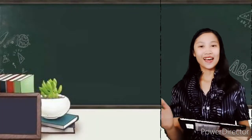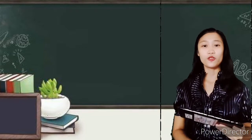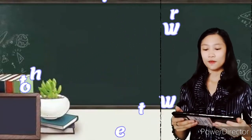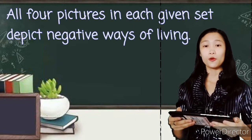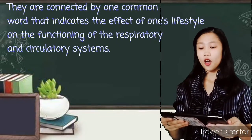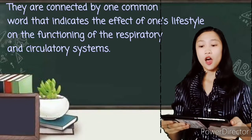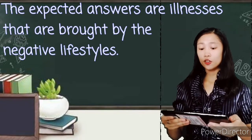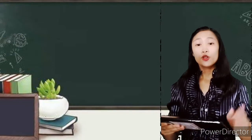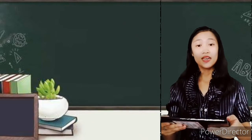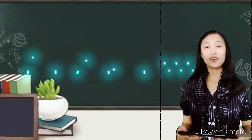So this time I will give the floor to Mom April for further discussions. Okay class, this time let's play a game in order for you to energize. This game is called 'What's the Word?' Here is the procedure: all four pictures in each given set depict ways of living. They are connected by one common word that indicates the effect of one's lifestyle on the functioning of the respiratory and circulatory systems. The expected answers are illnesses that are brought about by negative lifestyles. You will write your answers on the cut papers I have provided for you. Is it clear? Okay, let's get started.